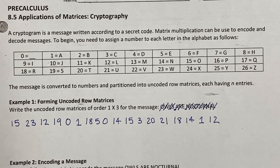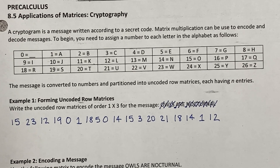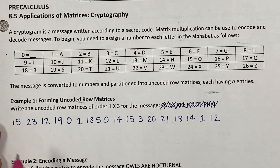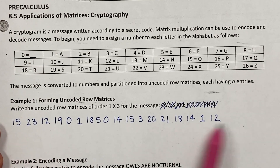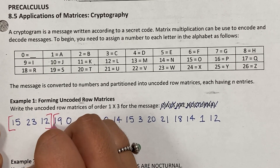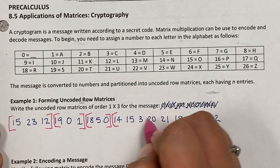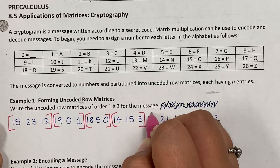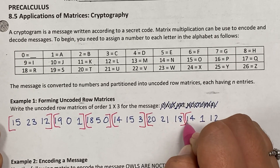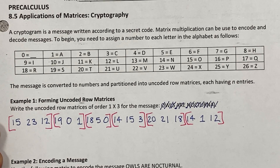The directions say to write the uncoded row matrices in the order of 1×3, so I'm going to partition all of these numbers into groups of 3s — 1×3, 1×3, 1×3 — and the process just keeps going. That is what you are doing when asked for just the uncoded row matrices.